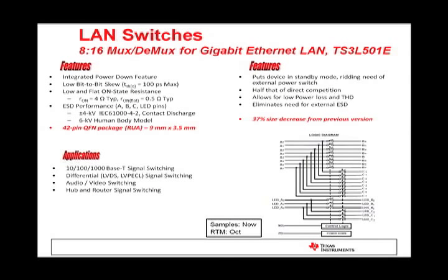For our variety of LAN switch devices, we highlight the TS3L501E. This is a 16-bit to 18-bit multiplexer/demultiplexer LAN switch with a single select, or SEL, input and a power-down mode input. This device provides additional I/Os for switching status-indicating LED signals. The select input controls the data path, and the power-down input can put the device into standby mode to minimize current consumption. It has very low input-output capacitance, high bandwidth, low skew, and low crosstalk, making it suitable for LAN applications such as 10, 100, or 1000 Base-T. This device can be used to replace mechanical relays in LAN applications.